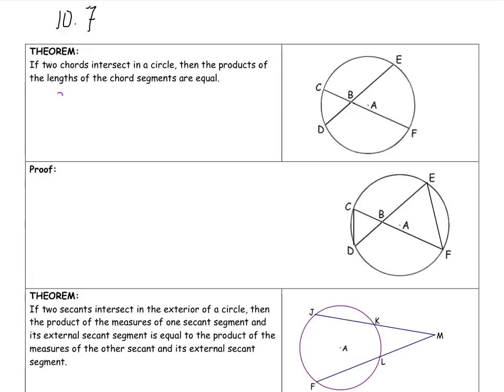So that says that CB times BF, so this length here times that length here, is equal to DB times BE. That's this length times that length. This will work for any two chords that intersect inside the circle, even if they're diameters.